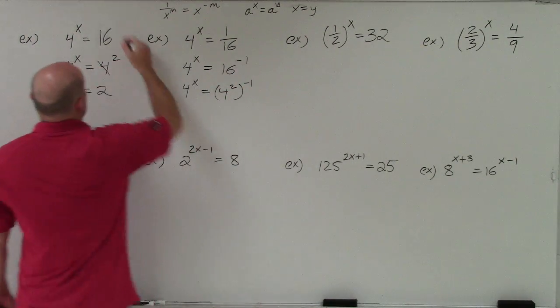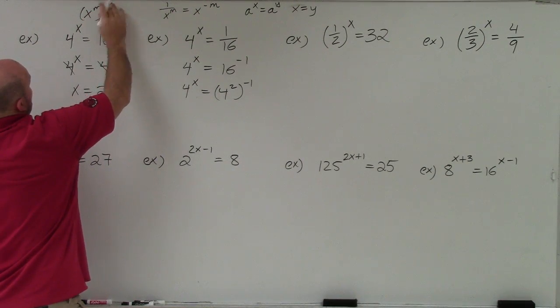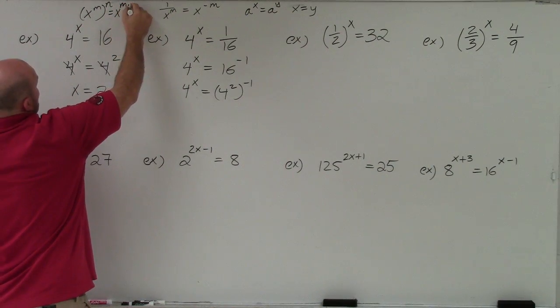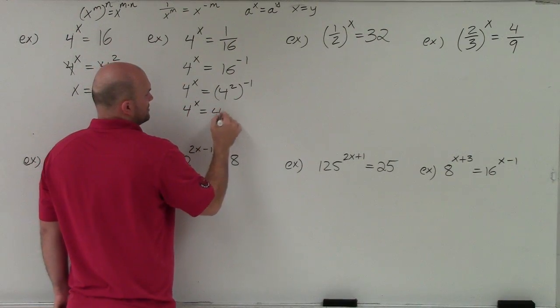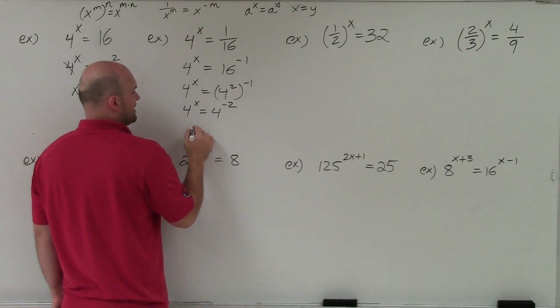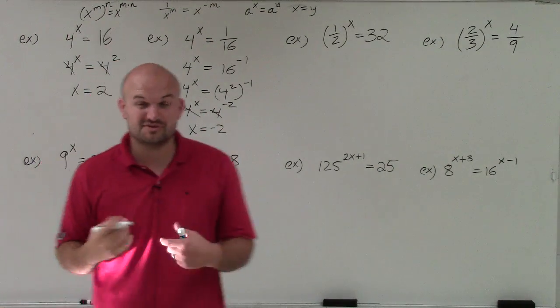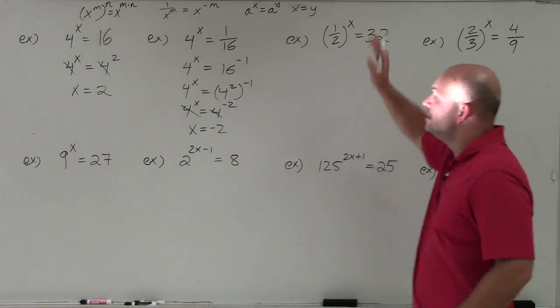Now, I know that 16 I can rewrite as 4 squared. Make sure that you're using your parentheses correctly. I'm going to want to use the power rule, which is when you have an exponent raised to another power, you multiply the powers. So now I'm going to multiply 2 times negative 1, so 4 to the x equals 4 to the negative 2. Now I can say that x is equal to negative 2.